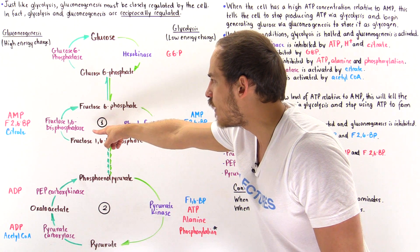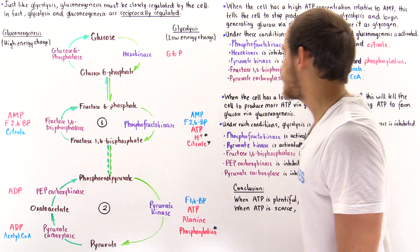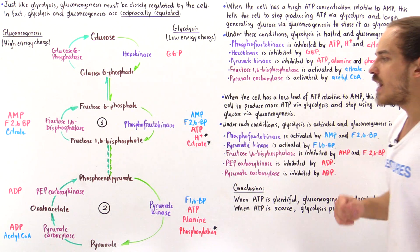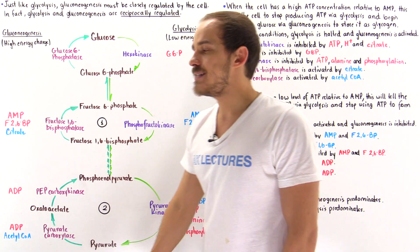On the other hand, fructose 1,6-bisphosphatase is inactivated by these two molecules, AMP and F2,6-BP. The PEP carboxykinase and pyruvate carboxylase are both inactivated by ADP.